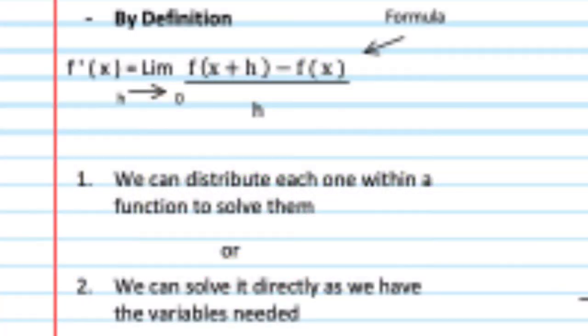As you can see, by definition, we can distribute each one of the functions to solve them, or we can do an easier one where we can solve it directly. Where f(x) is given, we substitute it in, and plug in the coordinates. Each on its own is zero.